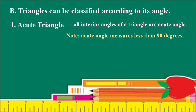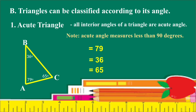Let's illustrate triangle ABC. The measure of angle A is 79 degrees, angle B is 36 degrees, and angle C is 65 degrees. So it is an Acute Triangle since each angle measures less than 90 degrees. Some figures are illustrated like this.